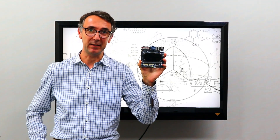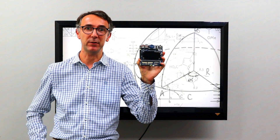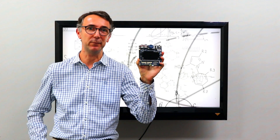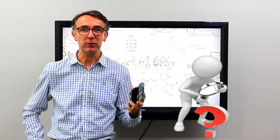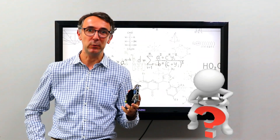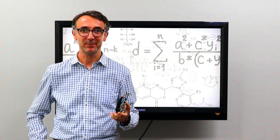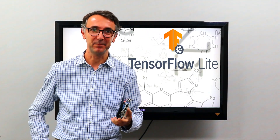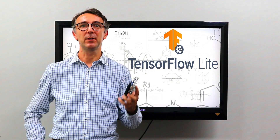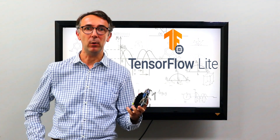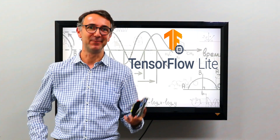By the way, it has an integrated neural processing unit capable of 2.3 TOPS. So the question to think about is: how do you do that? And the answer is TensorFlow Lite. Today's video is all about converting TensorFlow into TensorFlow Lite using TF Lite Converter.